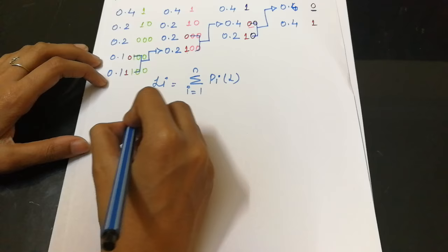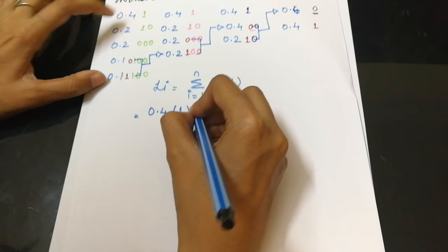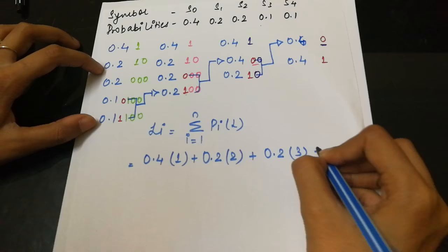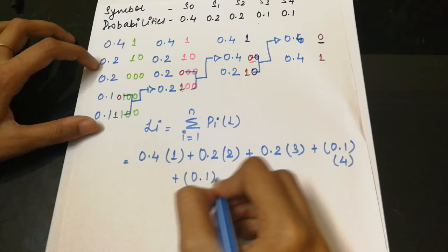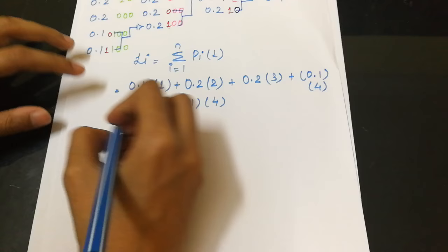This would become 0.4 into the length 1, 0.2 into the length, and so on. Now on adding this, we get L is equal to 2.2.